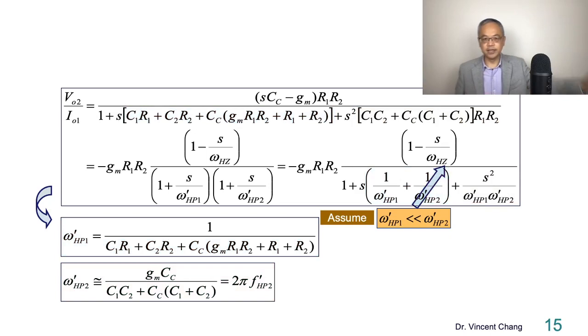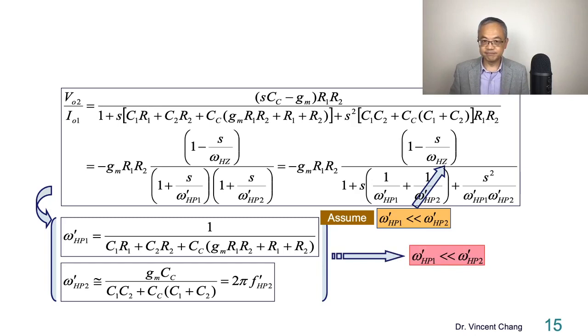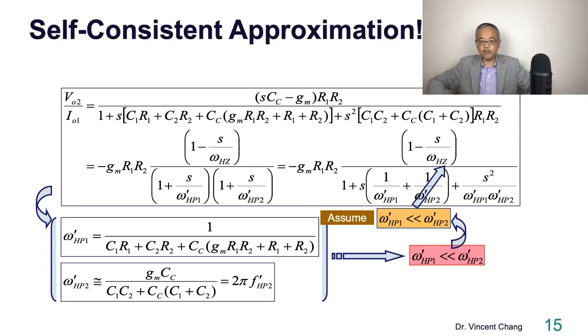Anyway, so now you see the gain, which means the omega HP1 prime is really small. So this result also supports the original assumption. So you start with the assumption, and then you get the result, and you examine and investigate the result. You find out the assumption makes sense, reasonable. So this is a sort of self-consistent approximation. So the trick lies on the self-consistent approximation.